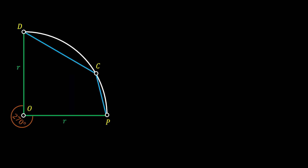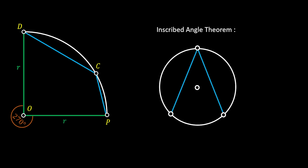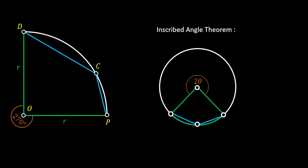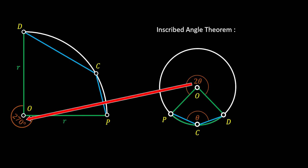Let's clear our image and only leave the lines inside the quarter circle. We will use the inscribed angle theorem to find the angle at point C. The inscribed angle theorem states that an inscribed angle on a circle is always half the measure of the central angle that subtends it. In our case we have the outer angle, and we can see that the central angle of 2θ corresponds to 270 degrees. That means the angle at point C must be half of 270 degrees, which is 135 degrees.